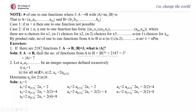Problem: if there are 2187 functions f from A to B and |B| = 3, what is |A|? The number of functions from A to B is |B|^|A|, which is 3^|A| = 2187 = 3^7, therefore |A| = 7.